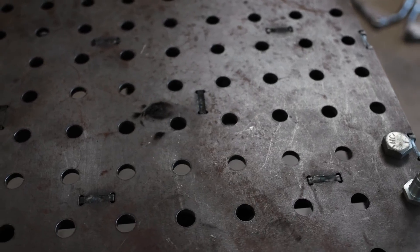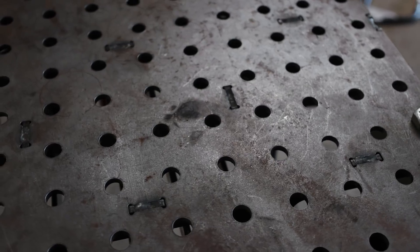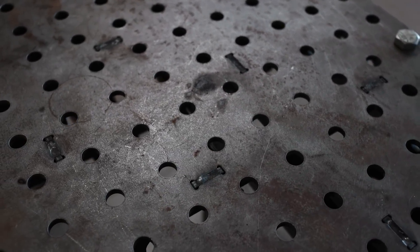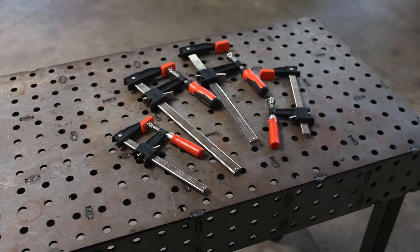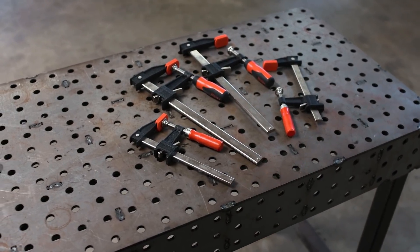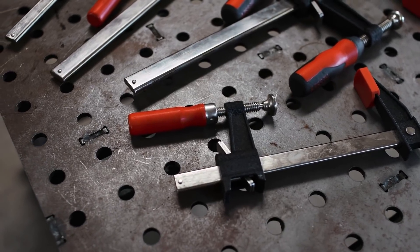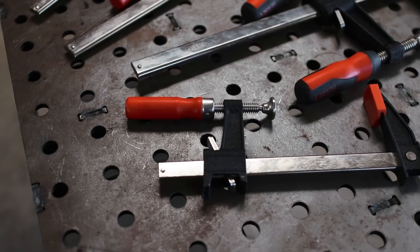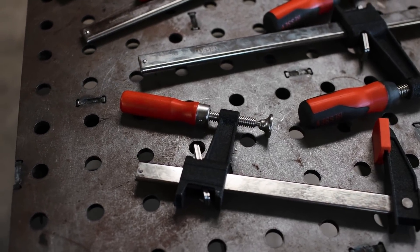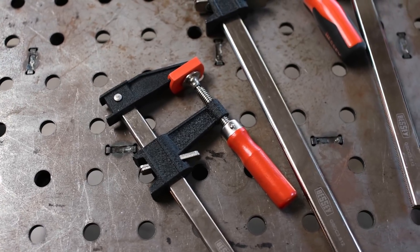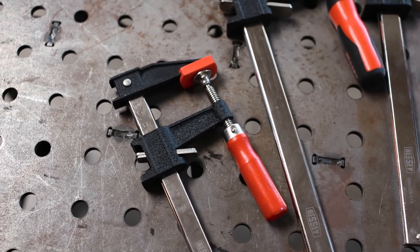Now before we can actually build anything, we've got to make some tools. Some of you may have wondered why my workbench is covered in holes, and I'm finally going to show you why. I ran over to Home Depot and bought some classic woodworking clutch-style clamps, and we're going to modify these to make them work with our current project. Now you could buy what we're going to make right off the shelf, but it tends to be kind of expensive and I'm interested in making my own.